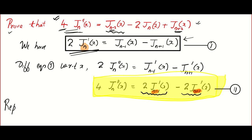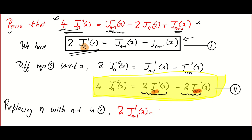Replacing n with n-1 in equation 1, what will we get? 2Jn-1'(x) is equal to J(n-2)(x) minus Jn(x). That is equation number 3.